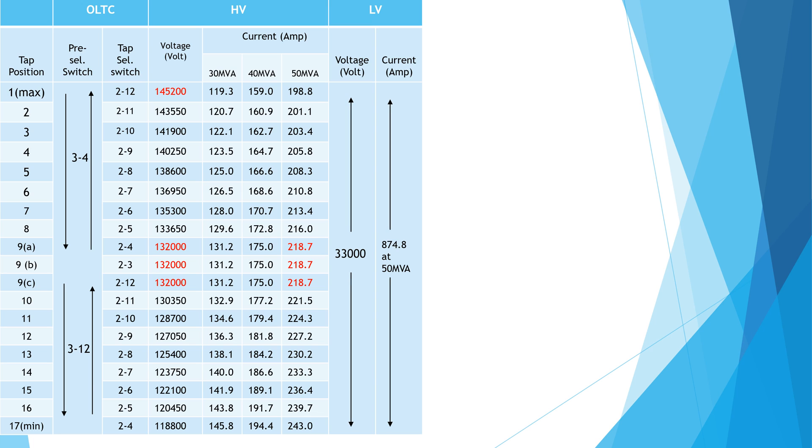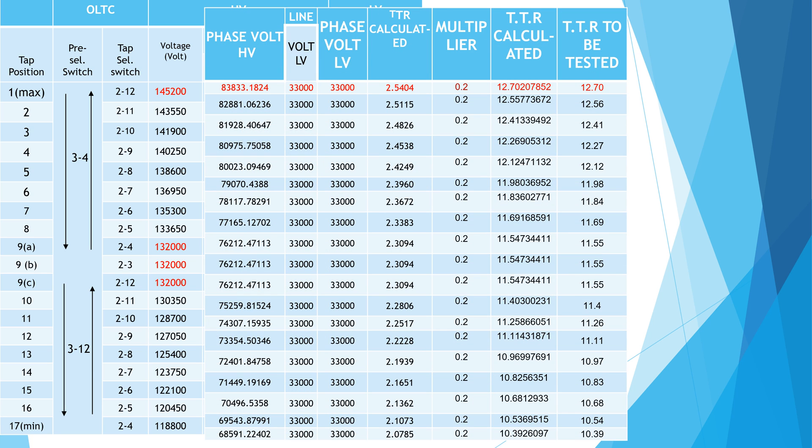This is the rating of a 132 by 33 kV 50 MVA transformer. Here line voltage at tap 1 is 145,200 volts and it is applied on star side. So calculated phase voltage is equal to 145,200 by root 3 is equal to 83,833.18 volts.